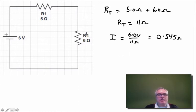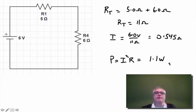So now I know the current flowing through this resistor. I can find the power in that resistor. I know it's equal to I squared times R, which is going to give me 1.1 watts. So this resistor is using 1.1 joules per second of energy. That's the power used in that resistor.